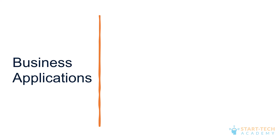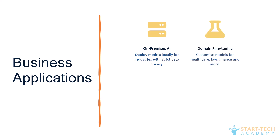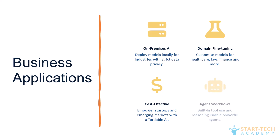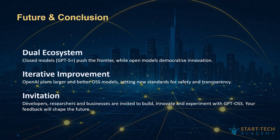Let's talk about the use cases and business applications of GPT-OSS. For those with data privacy concerns, it can be deployed on-premise so your data stays safe. You can perform domain-specific fine-tuning for healthcare, law, finance and many more fields. It is cost-effective so small businesses can use it, and it supports agentic workflows not present in other open source models. OpenAI's return to open source is more than just another model release — it is a signal that the future of AI will be built on both closed and open systems, each with a role to play. GPT-OSS puts powerful and transparent AI directly into the hands of the community, and the real change will come from how developers, businesses and researchers put it to work.